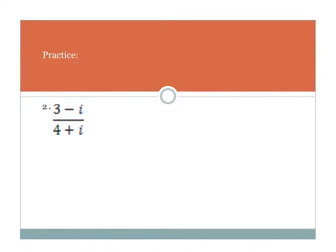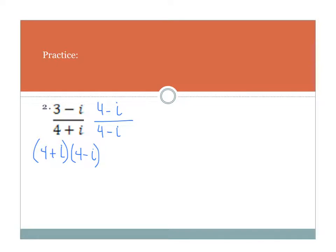Let's try one more example when we're multiplying by the conjugate to rationalize our denominator. I'm going to multiply by 4 minus i. Let's foil that denominator — why don't you foil this one out and see if you got the right answer. I got 17 for my denominator.